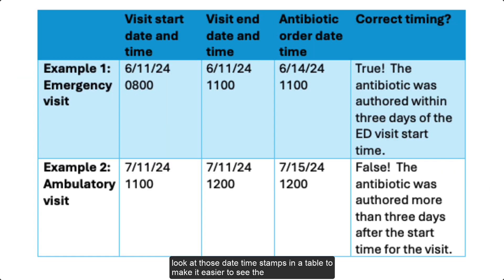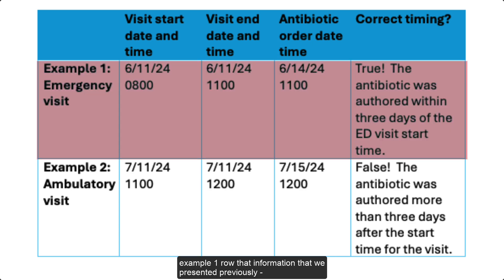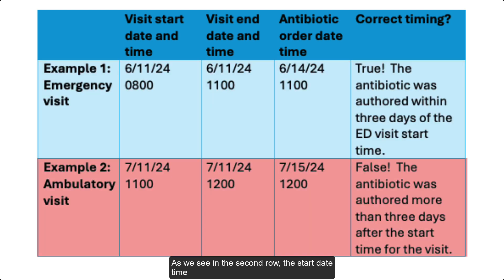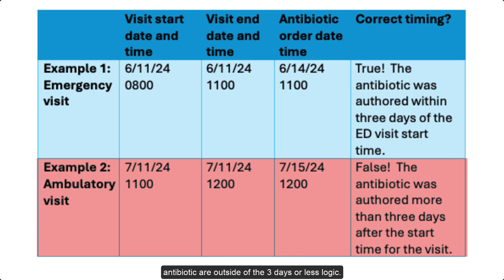Let's look at those date time stamps in a table to make it easier to see the logic in action. In example one row, we can see the start of the ED visit and the authored date and time for the antibiotic order. Using our within three days or less logic, we see that it evaluates to true. We've provided an additional example to show when that logic evaluates as false. In the second row, the start date time of the ambulatory visit and the authored date time for the antibiotic are outside of the three days or less logic.